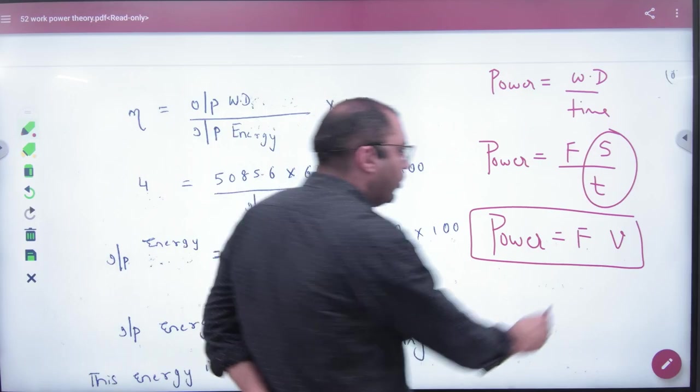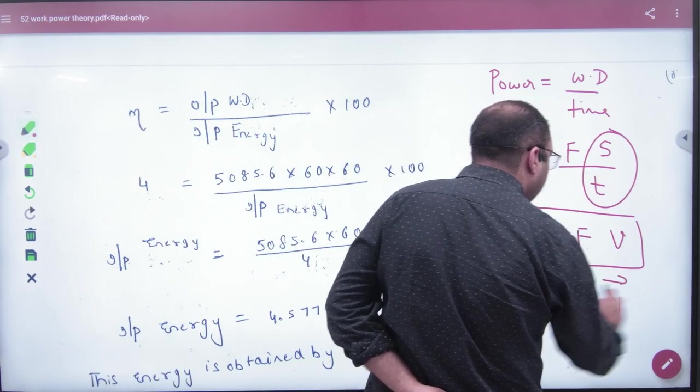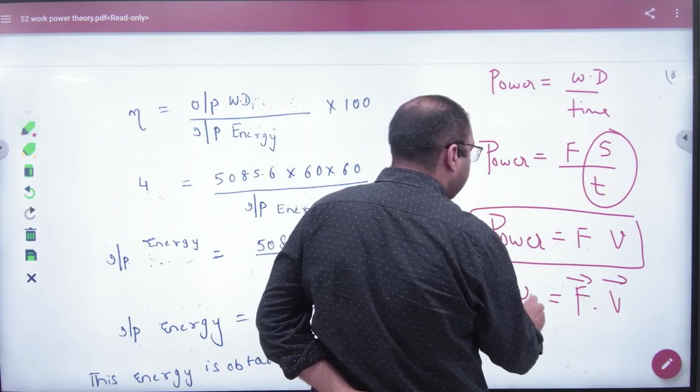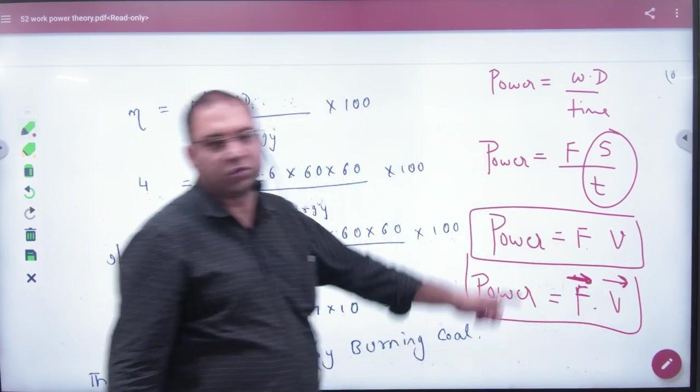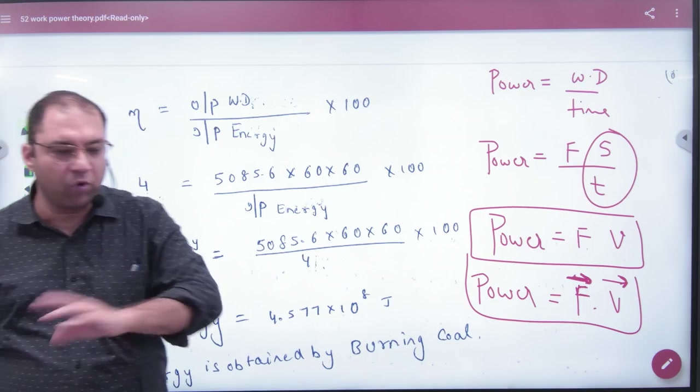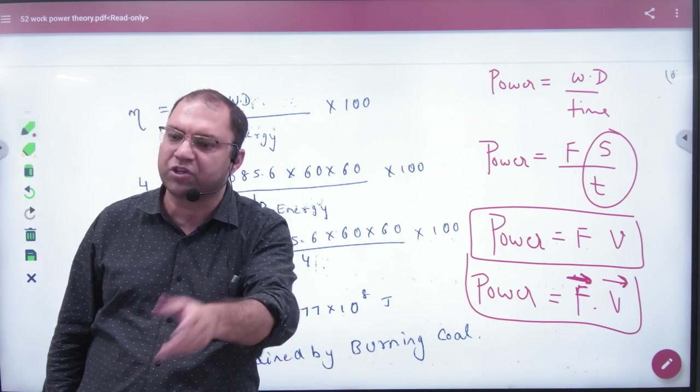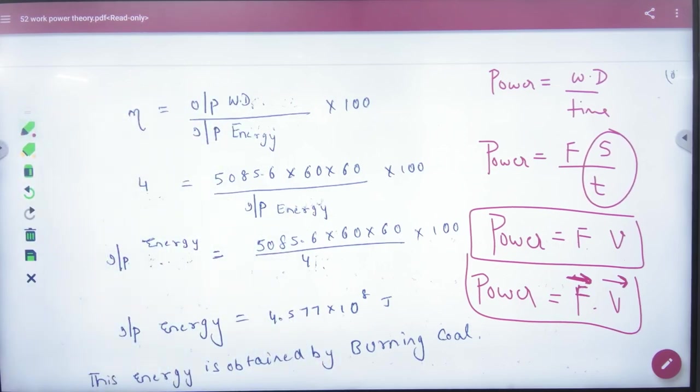Force is a vector, velocity is a vector, but their product power is scalar. So power equals F·V, the dot product. Please note this formula in your formula booklet: power equals force times velocity. If force and velocity are given, you can calculate the engine's or any machine's power.